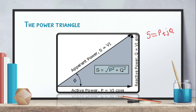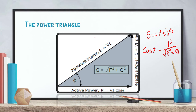Using the Pythagorean theorem, the magnitude of complex power S is the square root of P squared plus Q squared. The angle phi in the power triangle gives the power factor: cos phi equals P divided by S, which is P divided by the square root of P squared plus Q squared. This graphical method helps obtain P and the phase angle. Since cos theta equals P divided by S, the power triangle can be drawn for inductive loads.